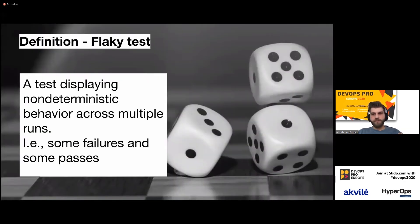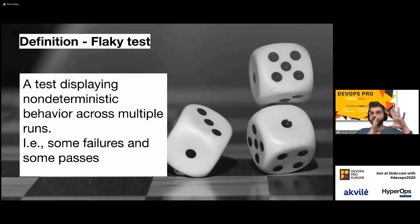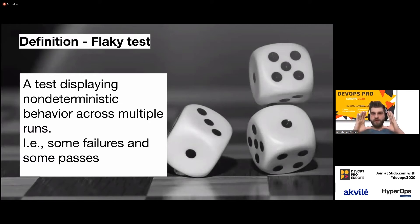First, I want to talk about the definition. A flaky test for us is a test that is displaying non-deterministic behavior across multiple runs — which means some runs fail and some runs pass without you knowing exactly why. The environment remains the same across multiple runs, but some runs fail and some runs pass.